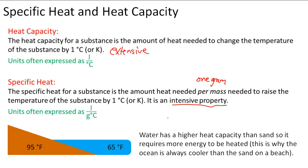We can understand specific heat to understand what happens on a beach with water. Water has a higher heat capacity than sand so it requires more energy to be heated. This is why the ocean is always cooler than the sand on the beach because the sand requires less heat. That heat that's coming from the sun is actually going to affect it more than the water.